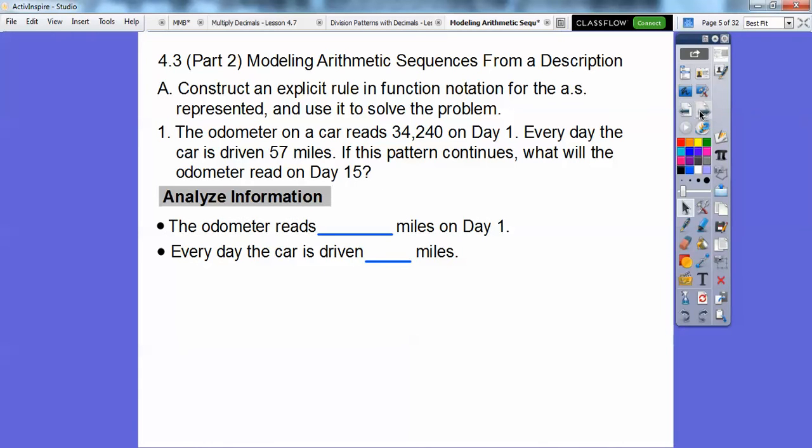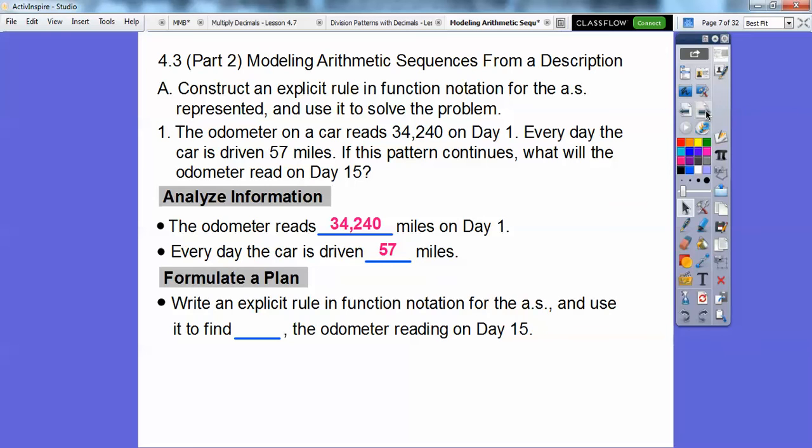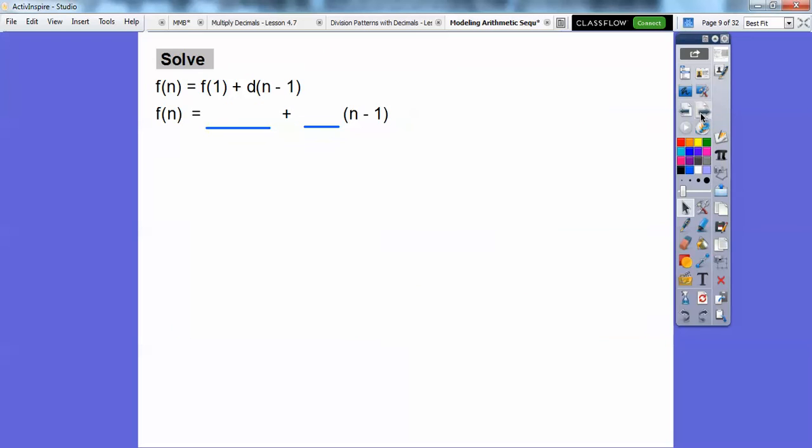Alright, so the odometer reads this on day one. Here's our F1, 34,240. And every day the car is driven this many miles, 57 miles. So that's D right there. So write an explicit rule in function notation for the arithmetic sequence and use it to find the 15th term, F of 15, which is the odometer reading on the 15th day.